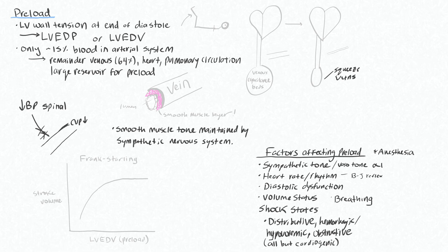If you give someone a spinal or induce a general anesthetic and lose your sympathetic tone, you'll have dilation of all these venous capacitance beds. The result is a decreased central venous pressure and less filling of your heart during diastole. To go back to the regular state we need to re-squeeze these veins somehow in order to increase our CVP.